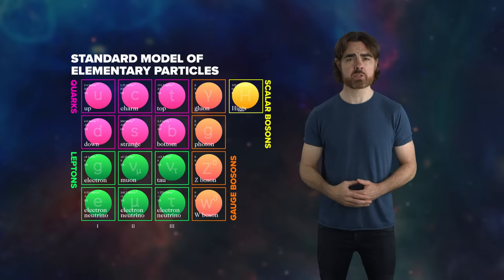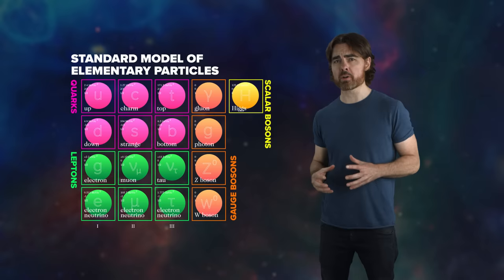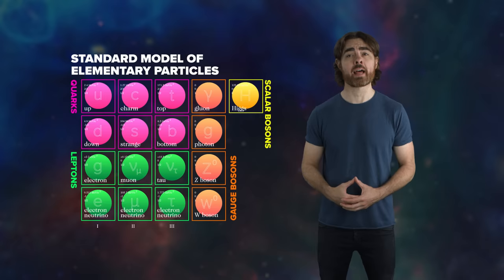Its equations predict many things with stunning accuracy. But they first require us to tune many mathematical knobs and dials. We need to use physical measurement to fix 19 free parameters, like the masses of particles. And then there's gravity, which doesn't fit into the standard model at all.